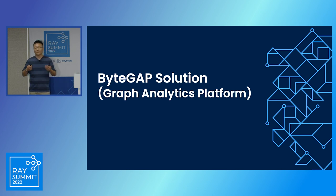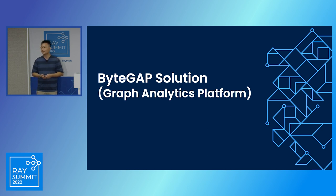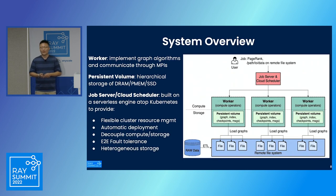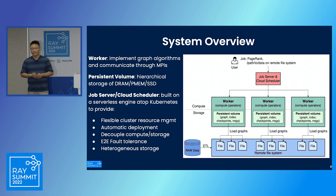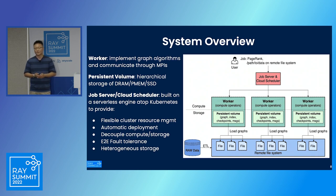Based on this analysis, we built our internal BATGAP solution — the Bytedance Graph and Analytics Platform. Looking at the system overview, we have several components. In the middle are workers, which are the major components — the place where we implement compute operators for different graph algorithms, such as graph mining and graph computing logic. They communicate with each other through MPI.